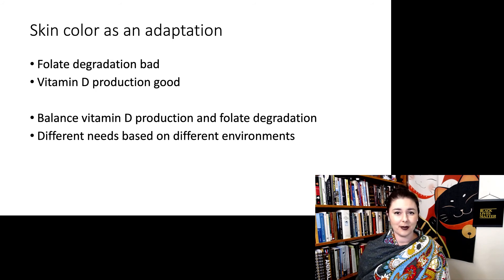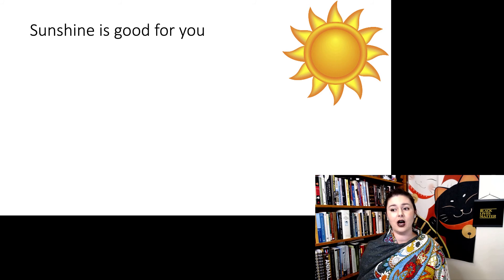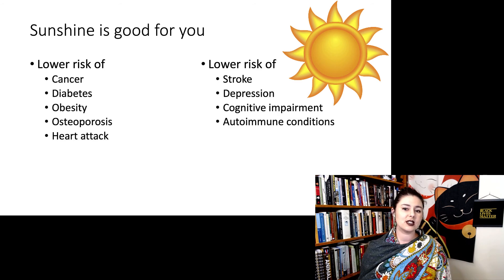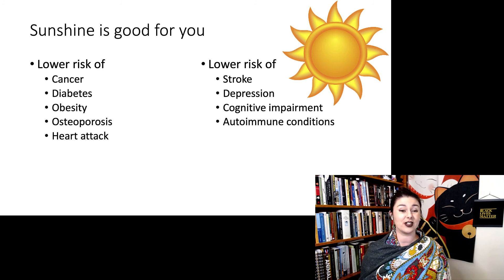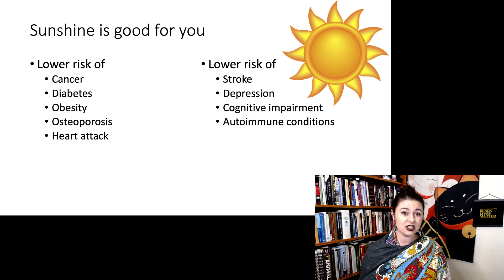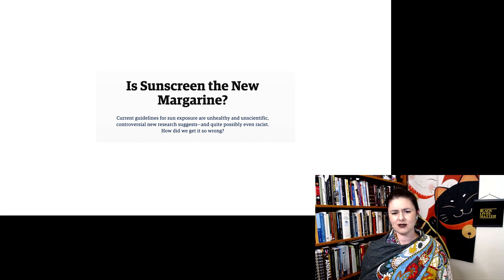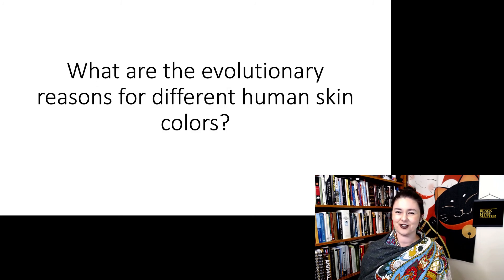This has been the classic explanation for many years, but there is actually additional research coming out suggesting that in general the sun is just good for us. While vitamin D is important, people are starting to wonder if it's just a side effect and there are actually more different benefits from the sun. We notice a lower risk of many first-world diseases with regular sunshine — lower risk for cancer, diabetes, obesity, osteoporosis, heart attack, stroke, depression, cognitive impairment, and autoimmune conditions. I highly recommend you read the article written by Outside Magazine — it has a weird clickbait title, but the content is very good. So can you explain what are the evolutionary reasons for differences in human skin color?